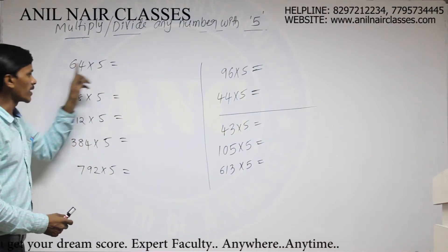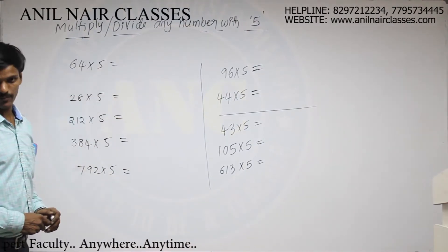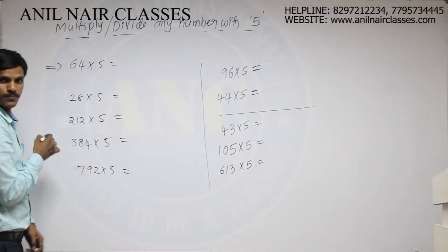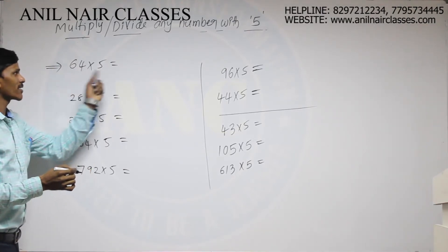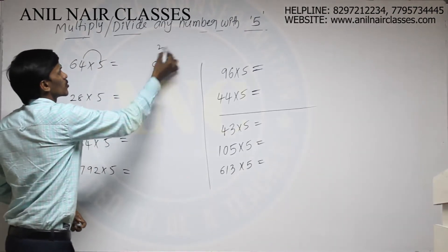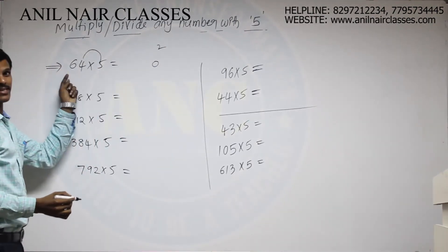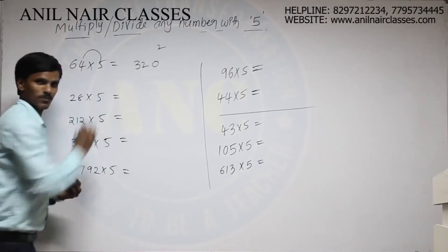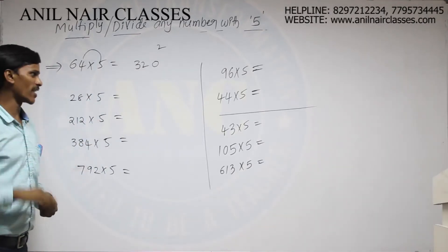You have to multiply any given number with 5. So generally what the students will do, for suppose they have to calculate this value, then 5 fours are 20, 2 will be the remainder, 5 sixes are 30 plus 2, 32. So like this you can get the answer.